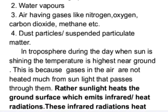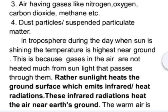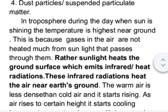During the daytime when the sun is shining, the temperature is highest near the ground. This is because gases in the air are not heated much by the sunlight that passes through them. Rather, sunlight heats the ground surface, which emits infrared or heat radiations. These infrared radiations then heat the air near the earth's ground.